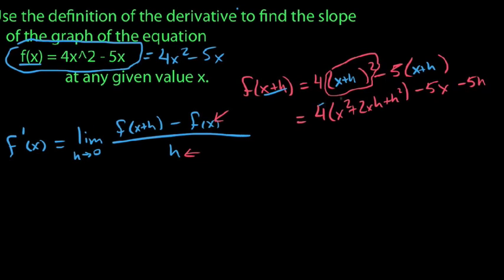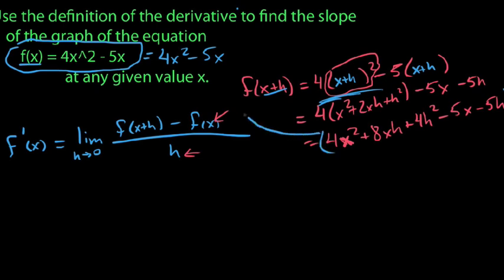And so we're going to go ahead and distribute this 4 here. We end up with this expression: 4x squared plus 8xh plus 4h squared minus 5x minus 5h. And so you'd say, can I combine like terms? Well, there's nothing that goes together here. But this is indeed f of x plus h, or the entire expression that we're going to need to substitute into this for our derivative.